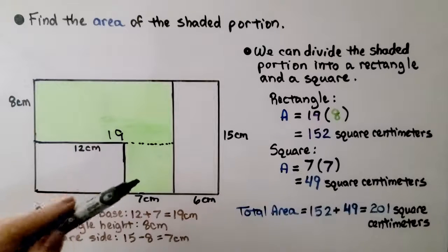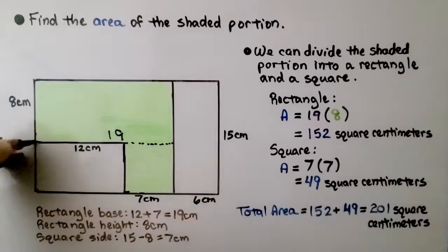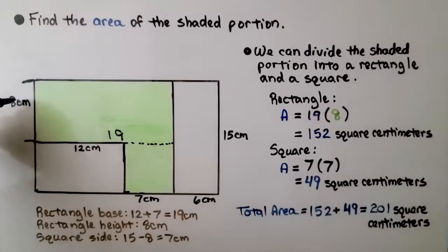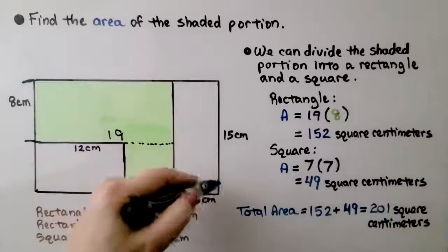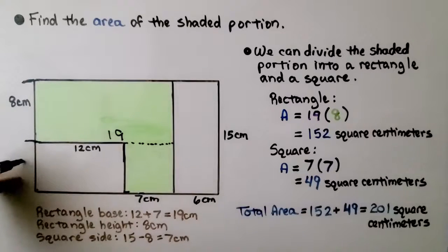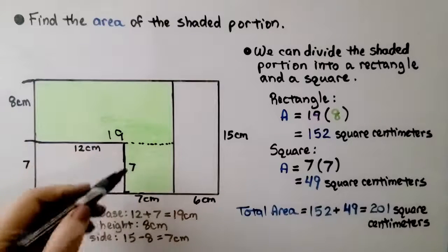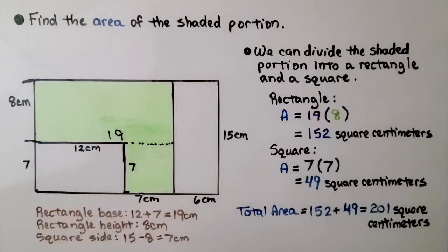For our square, we can see that this is 15 centimeters and from here to here is 8 centimeters. They need to match 15 minus 8. That would make this 7, which means that's 7. We have a 7 centimeter by 7 centimeter square.